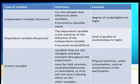Second is dependent variable, or response. The dependent variable is the outcome of the influence of the independent variable. It is the presumed result or effect. Example: level of grades of students, from low to high.